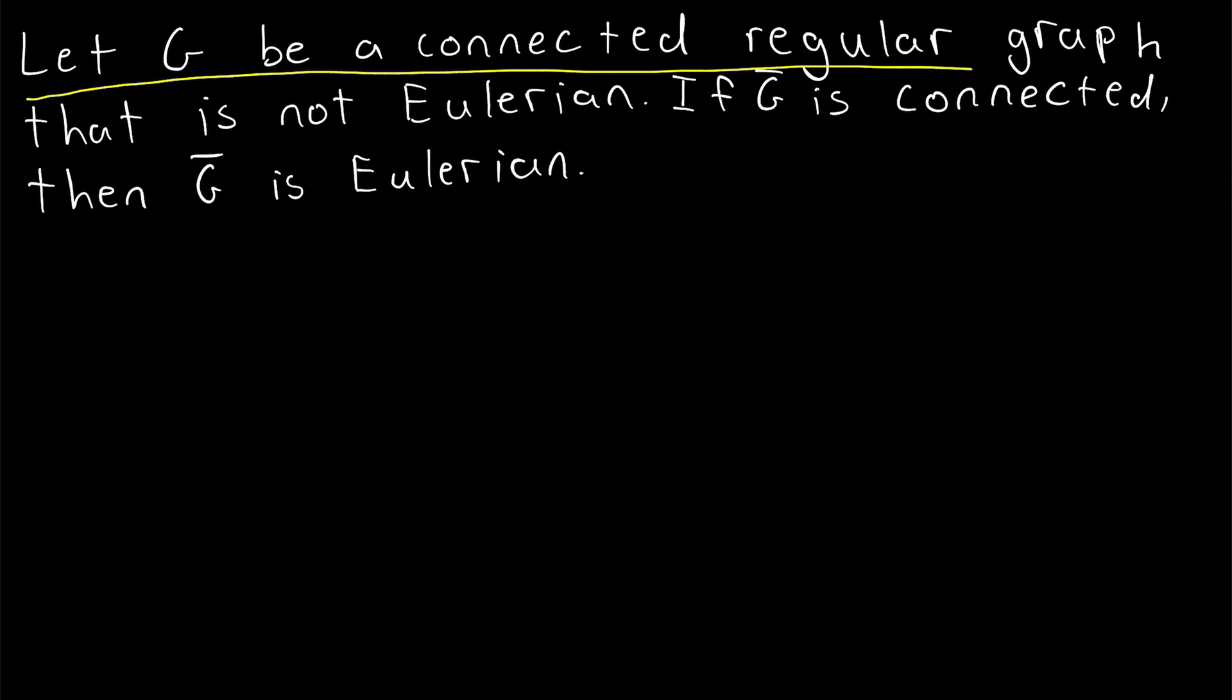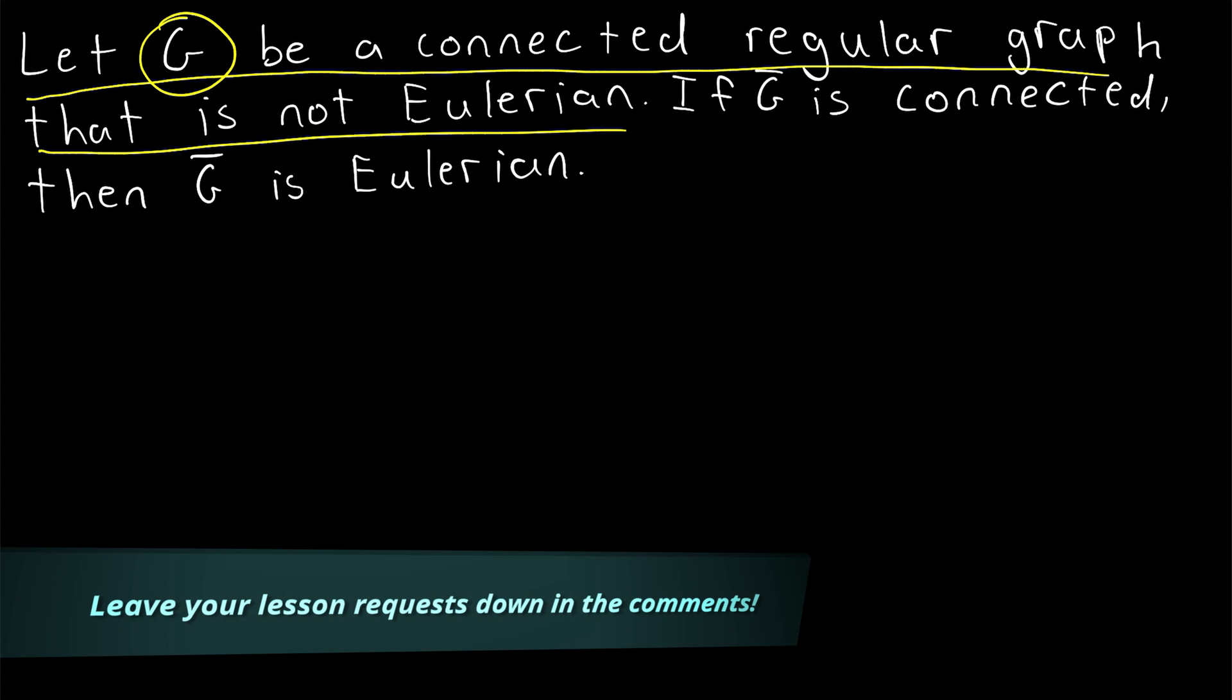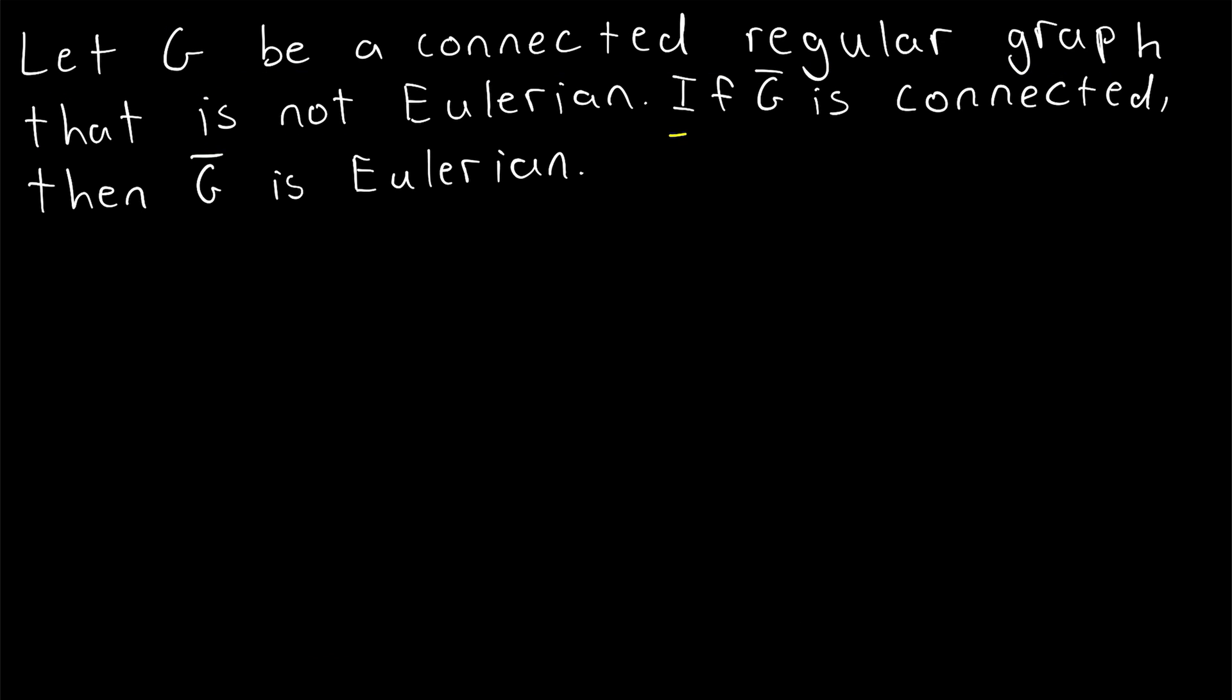Let G be a connected regular graph that is not Eulerian, so every vertex of G has the same degree, and G does not contain an Eulerian circuit. Then, if G complement is connected, then G complement is Eulerian.